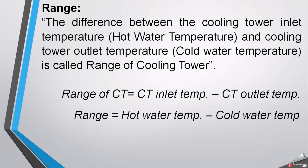Range is the difference between the cooling tower inlet temperature, which is the hot water, and the cooling tower outlet temperature, which is the cold water coming out. Range of cooling tower equals cooling tower inlet temperature minus cooling tower outlet temperature — or hot water temperature minus cold water temperature. This temperature difference is defined as the range.